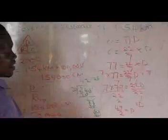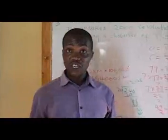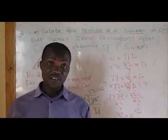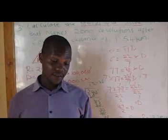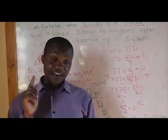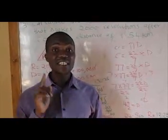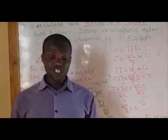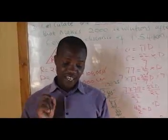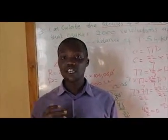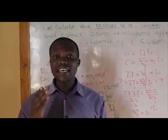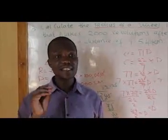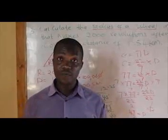Now I have a challenge question for you to work out at home. A car wheel makes 2,000 revolutions after covering a distance of 3.08 kilometers. What is the circumference of the wheel in centimeters? Using the formula, you will be able to get the answer. Send it to the number that will appear on screen and I will give you feedback. I wish you all the best.